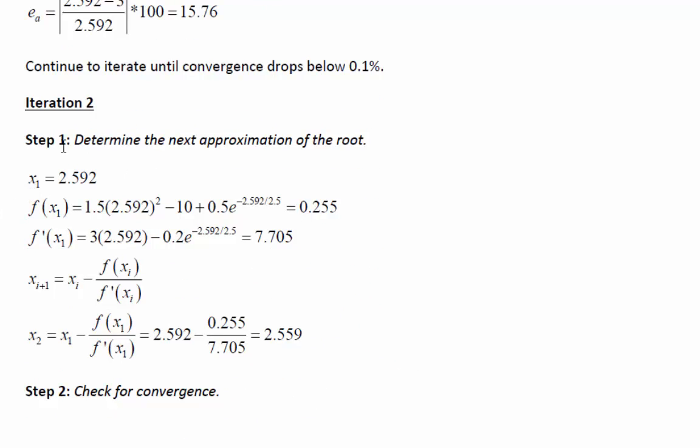We take our x from iteration one, which was 2.592, plug it into our function and our derivative, and use the Newton-Raphson formula. We get x2 by setting it equal to x1 minus the function at x1 divided by the derivative at x1. So 2.592 minus the function at 2.592 divided by the derivative at 2.592, and we go from 2.592 to 2.559. We're getting much closer.